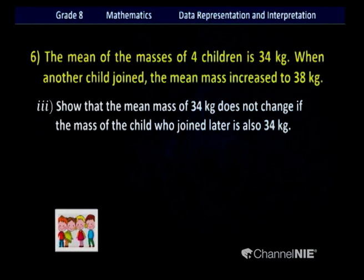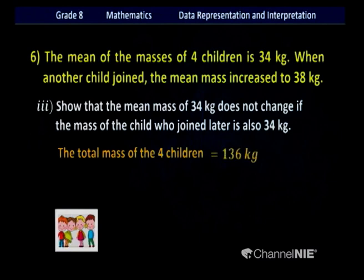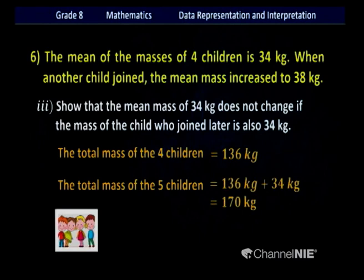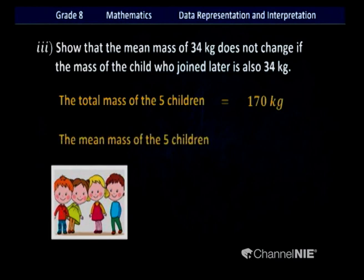Third part: show that the mean mass of 34 kilograms does not change if the mass of the child who joined later is also 34 kilograms. If the 5th child's mass is 34, total mass of all 5 is 136 + 34 = 170 kilograms. Mean of 5 children: 170 ÷ 5 = 34. So if the 5th child's mass is also 34 kilograms, the mean would not change.